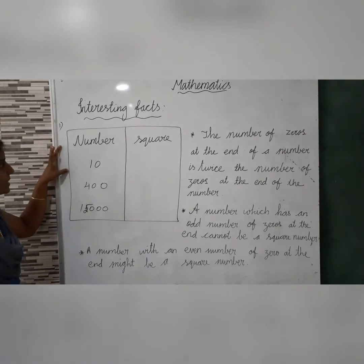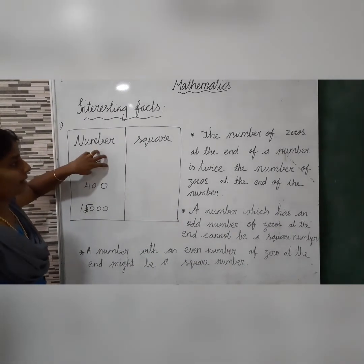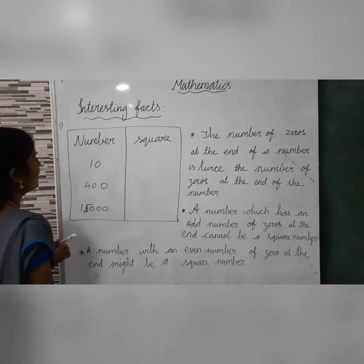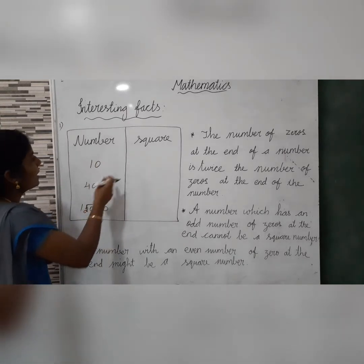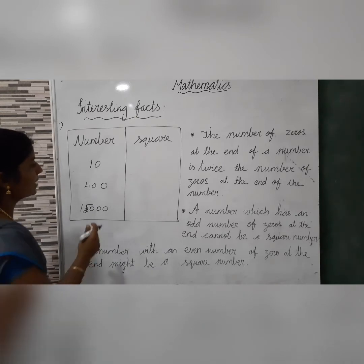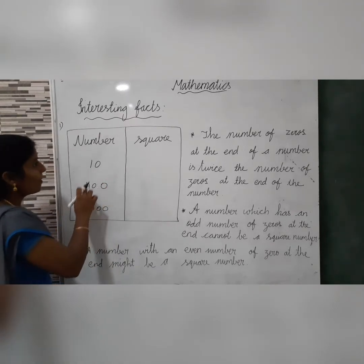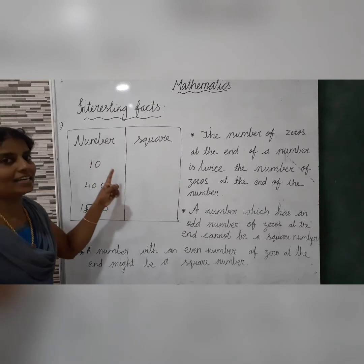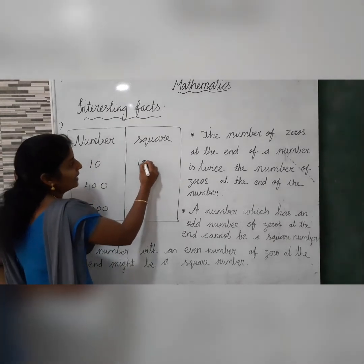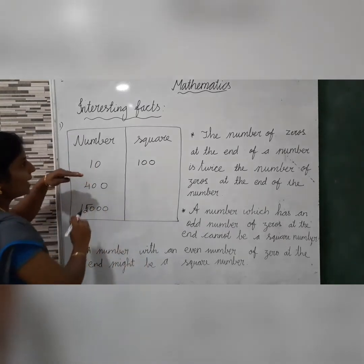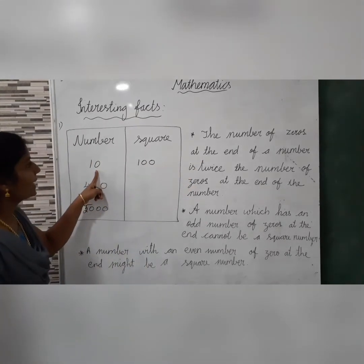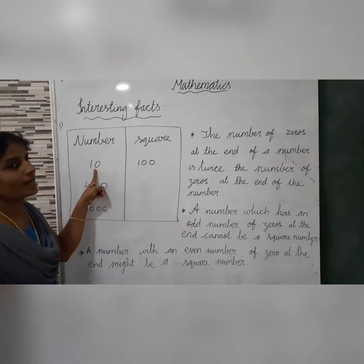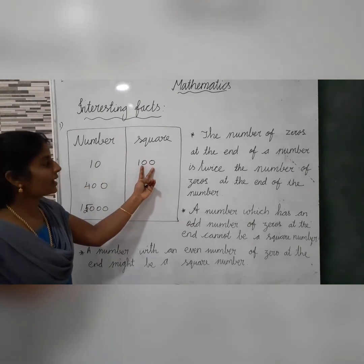First interesting fact: the number of zeros at the end of a perfect square is twice the number of zeros at the end of the original number. For example, take 10 — it has one zero at the end. 10² = 100, which has two zeros — that is twice the number of zeros.